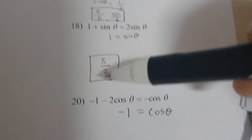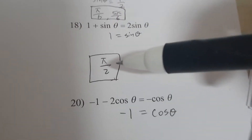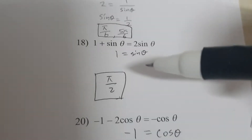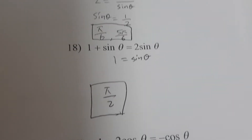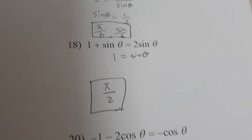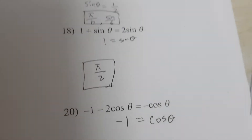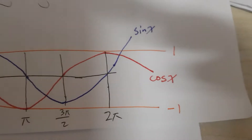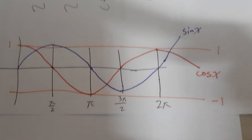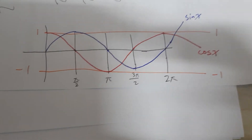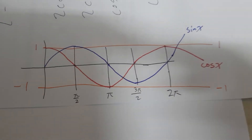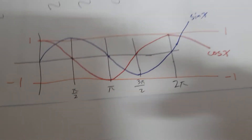And how do we know that it's pi over 2? We can just draw a graph. So here, this is the sine and cosine graph.